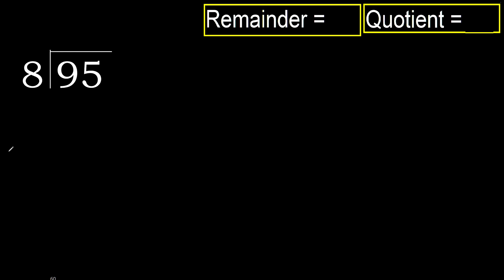95 divided by 8. Starting with 9: 8 multiplied by which number is nearest to 9 but not greater? 8 multiplied by 2 is 16, which is greater. 8 multiplied by 1 is 8, which is not greater. Subtract. 1, bring down next digit.